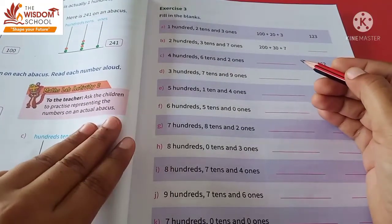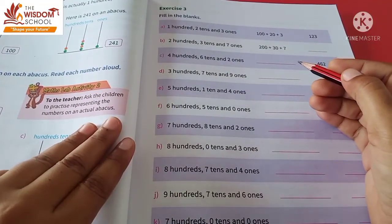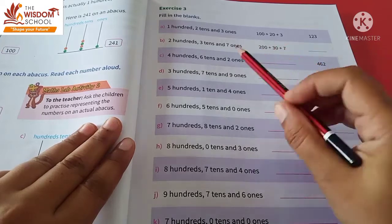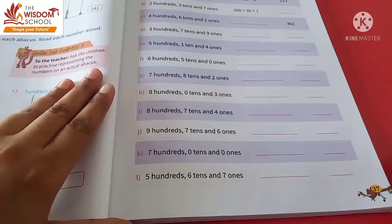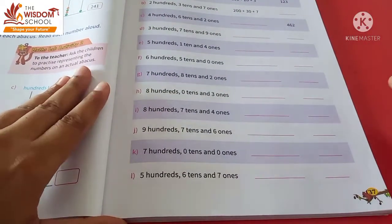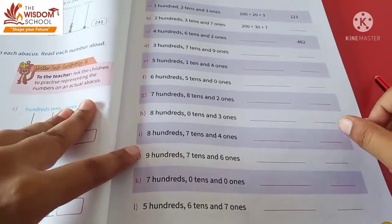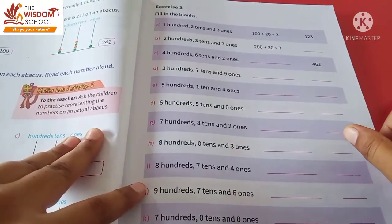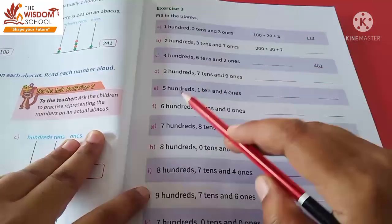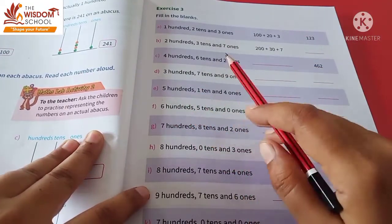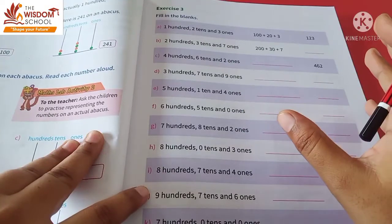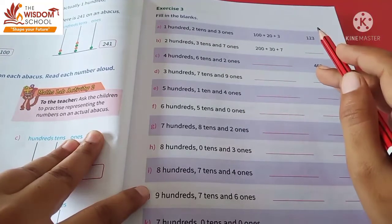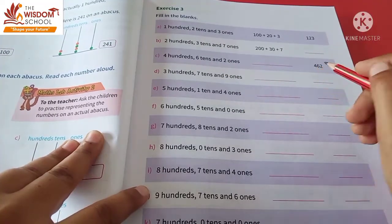Hello students, how are you? I hope you all are fine. Children, today we are going to solve Exercise Number 3 on page number 37. In this, children, we are given some of the numbers in the form of words, so we have to find out those and identify a three-digit number.